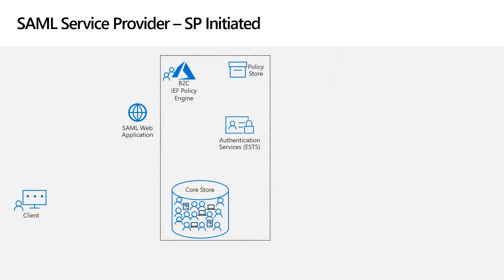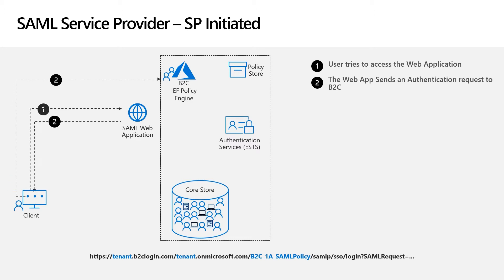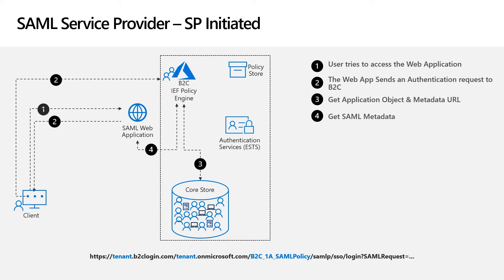The first flow to discuss is SAML service provider, or SP, initiated. The flow begins when a user tries to authenticate to a website secured using SAML. The web application generates a SAML authN request and sends it to B2C via the client's browser. Part of the URL used to send this request contains the B2C policy. B2C will then search for an application object using the issuer URL sent in that authN request. When B2C finds the application object, it extracts the SAML metadata URL and retrieves the metadata from the service provider.